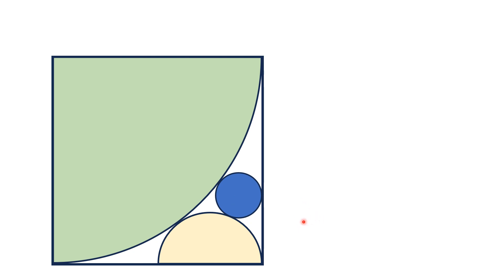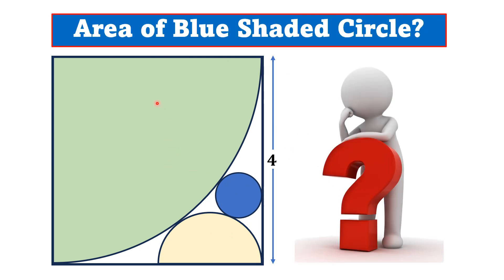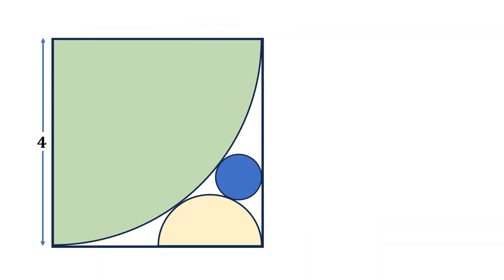If the side length of the square is 4 units, then using this data, we have to find the area of the blue shaded circle. Let's move towards the solution.